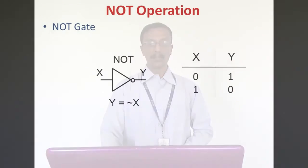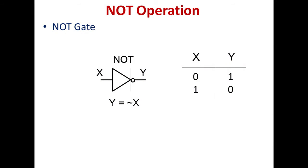Now, we will see the operation of NOT gate. The symbol of NOT gate is shown in the figure. The input is A and the output is Y. The output of a NOT gate is the complement of the input. The expression of NOT gate is Y = Ā. From the truth table: if the input is 0, the output is 1, and if the input is 1, the output is 0.